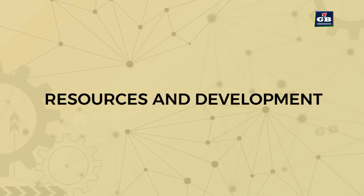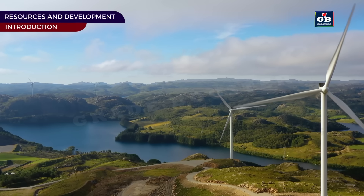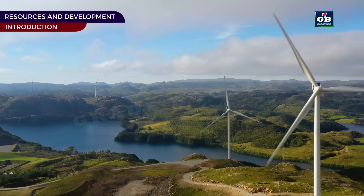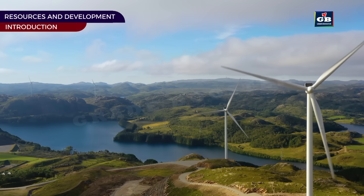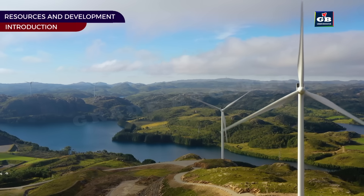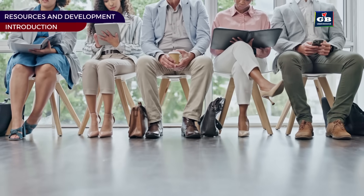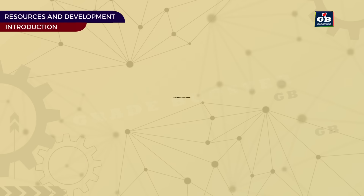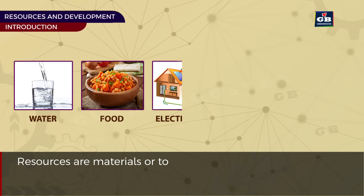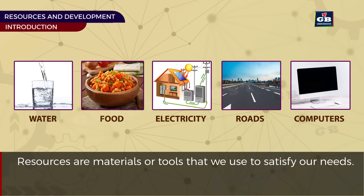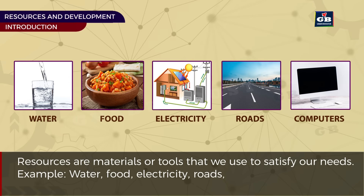Resources and Development. Resources are everything around us that help us to live a better life. They include things from nature, things made by humans, and even our own skills and knowledge. Resources are materials or tools that we use to satisfy our needs. For example, water, food, electricity, roads, and computers are all resources.